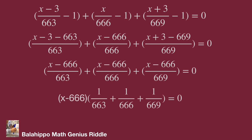Factorization — we factor out x minus 666 times the quantity 1 over 663 plus 1 over 666 plus 1 over 669, equal to 0. So x equals 666.